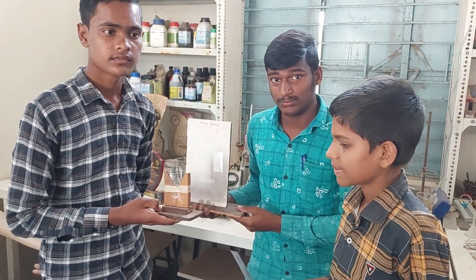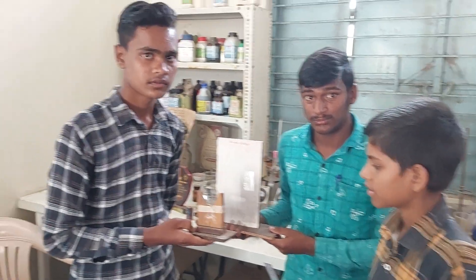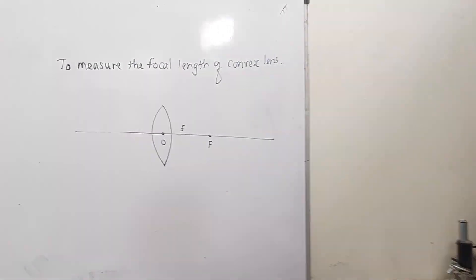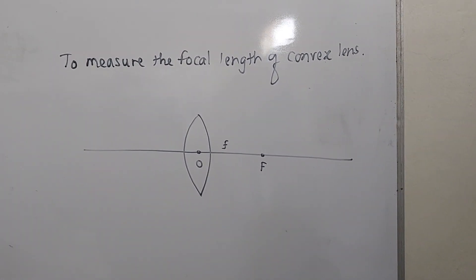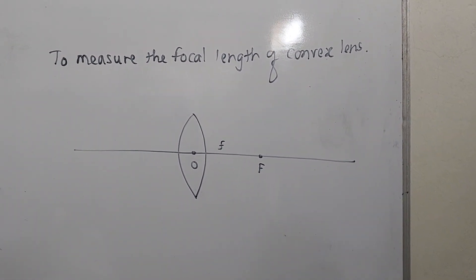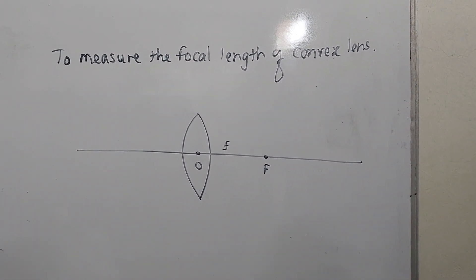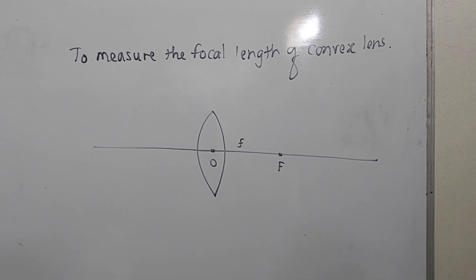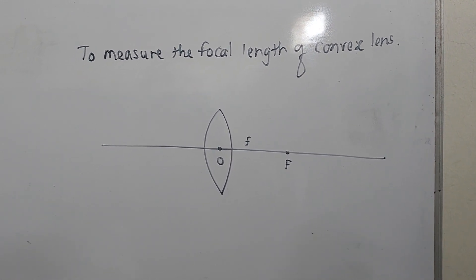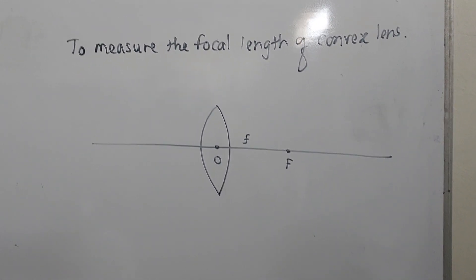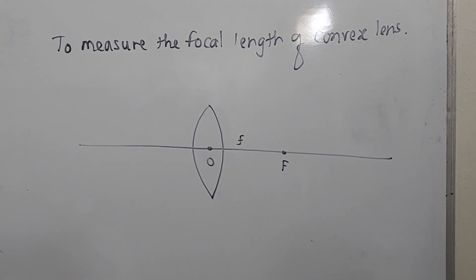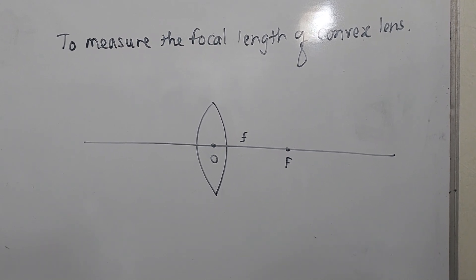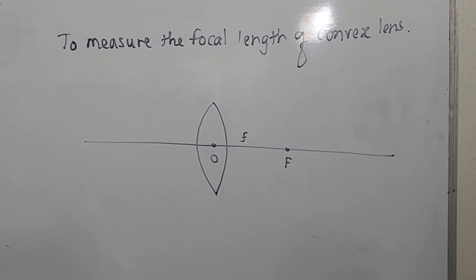How do we define the focal length? The focal length is the distance between the optical center and the focus. That is called the focal length.